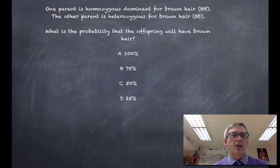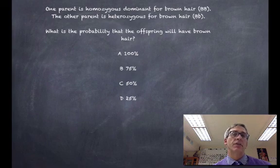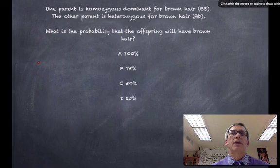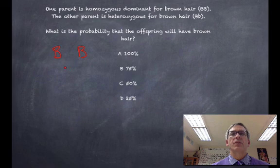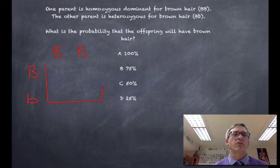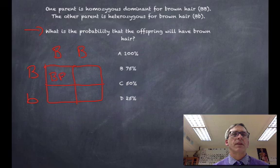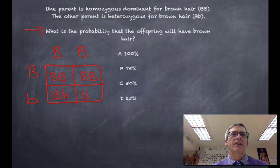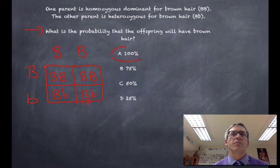I'll leave you with one problem from a released HSA exam. I'd like you to read it and then maybe stop the video and then check to see whether you're correct. A parent who is homozygous dominant for brown hair, BB, is being crossed with someone who is heterozygous for brown hair, Bb. So when I set up my Punnett square, I always work these out off to the side. What's the probability that the offspring will have brown hair? Here's one with brown hair, here's one with brown hair, here's one with brown hair despite the fact that they're heterozygous, and here is another with brown hair. So 100% probability.